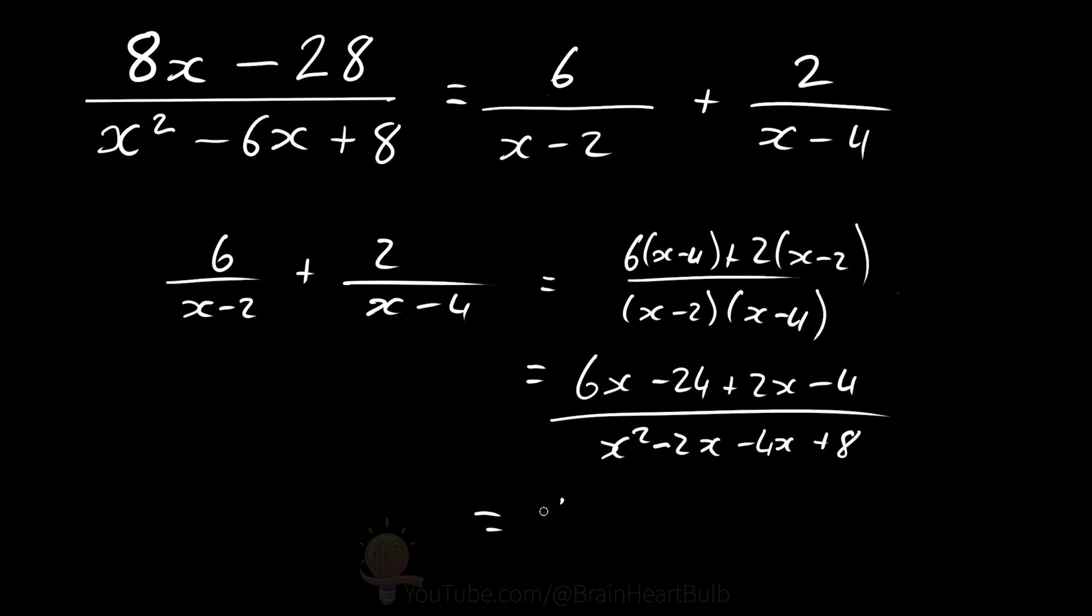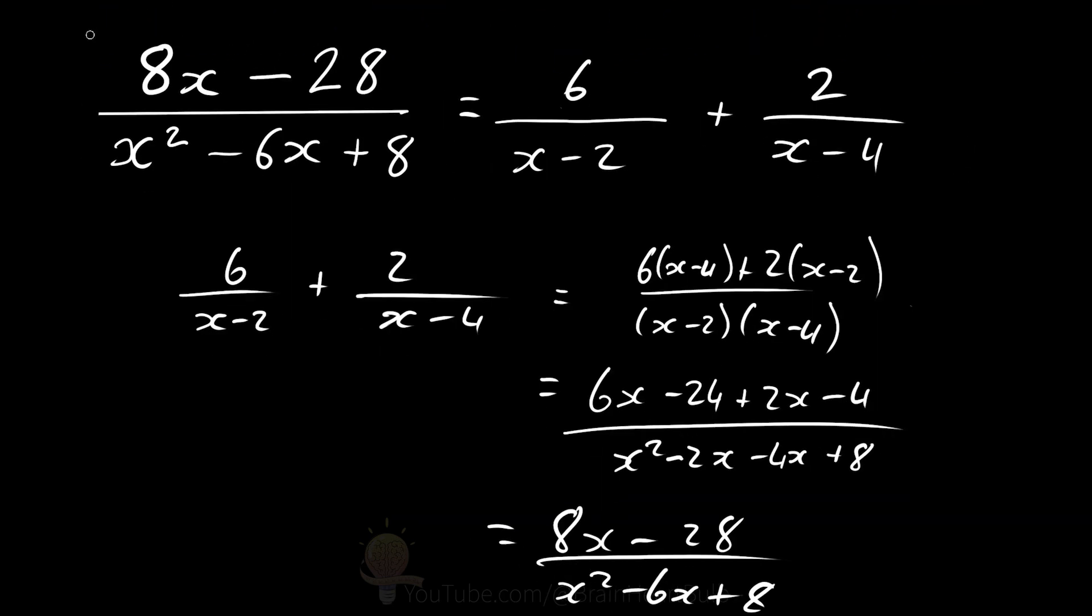And that gives us an answer of 8x minus 28 divided by x squared minus 6x plus 8, which should equal our original partial fraction up here. So this answer is correct.